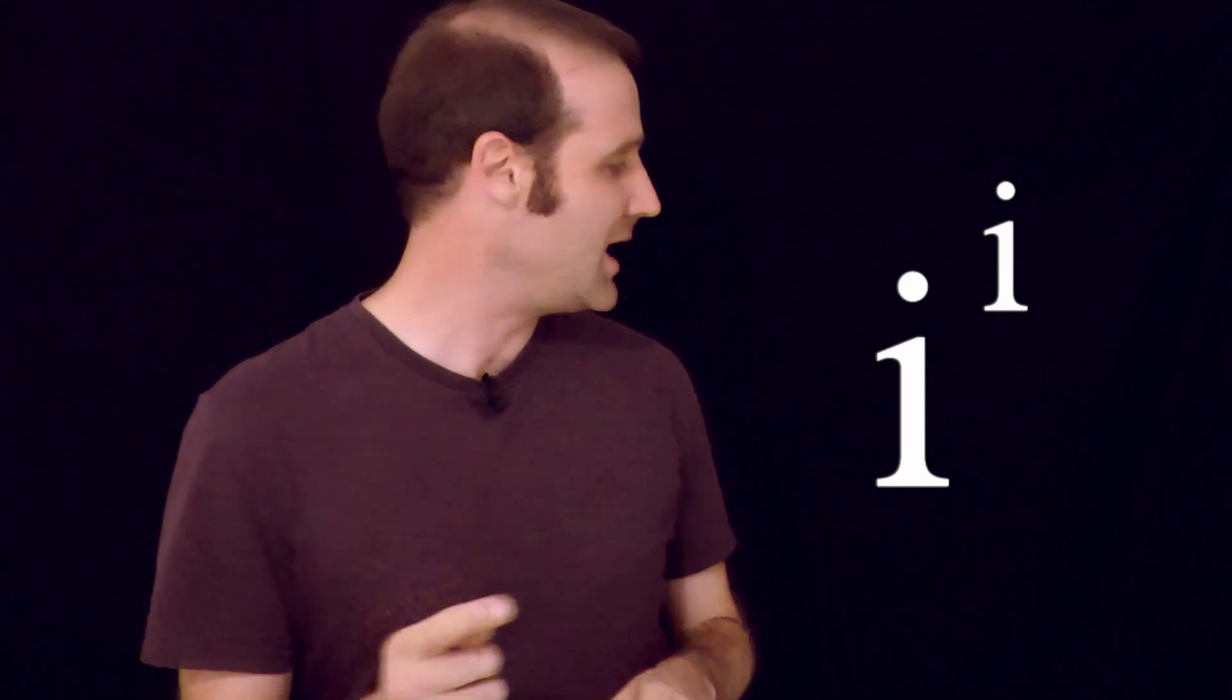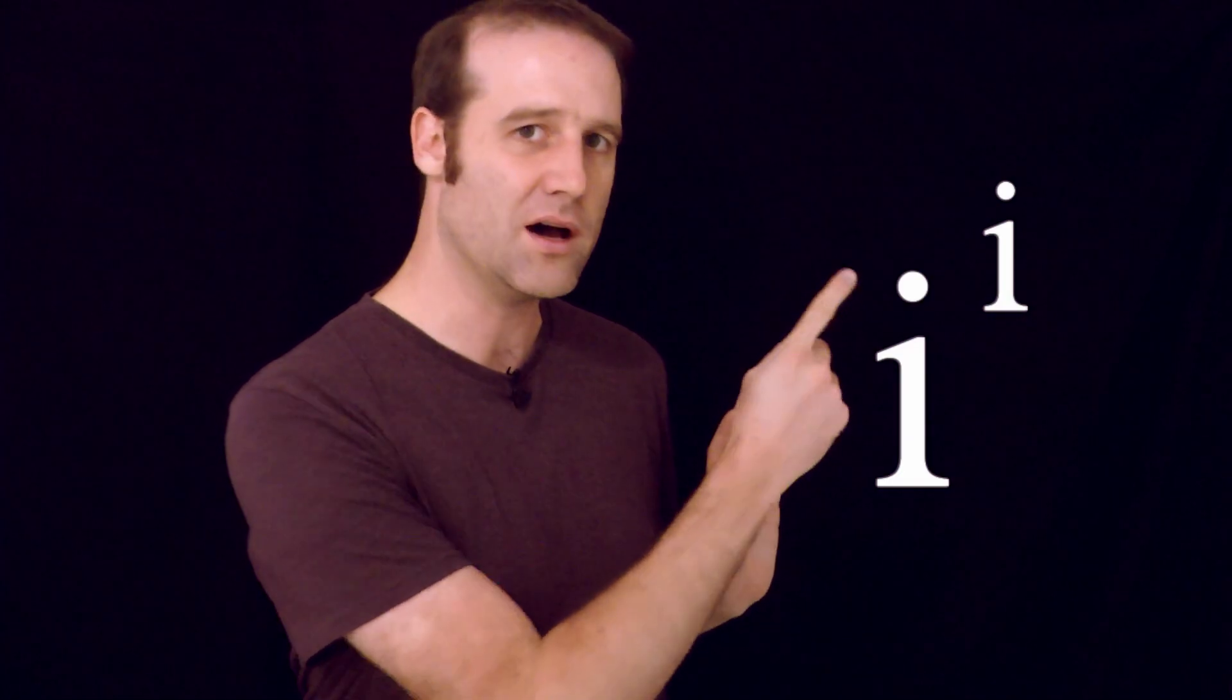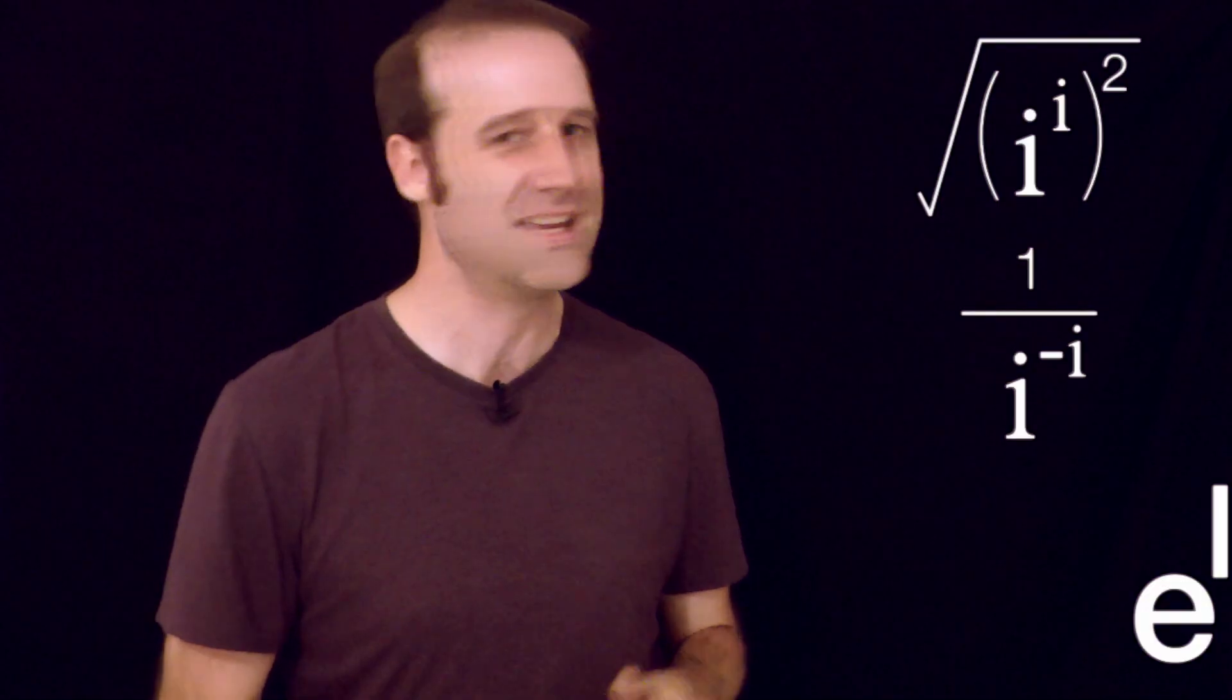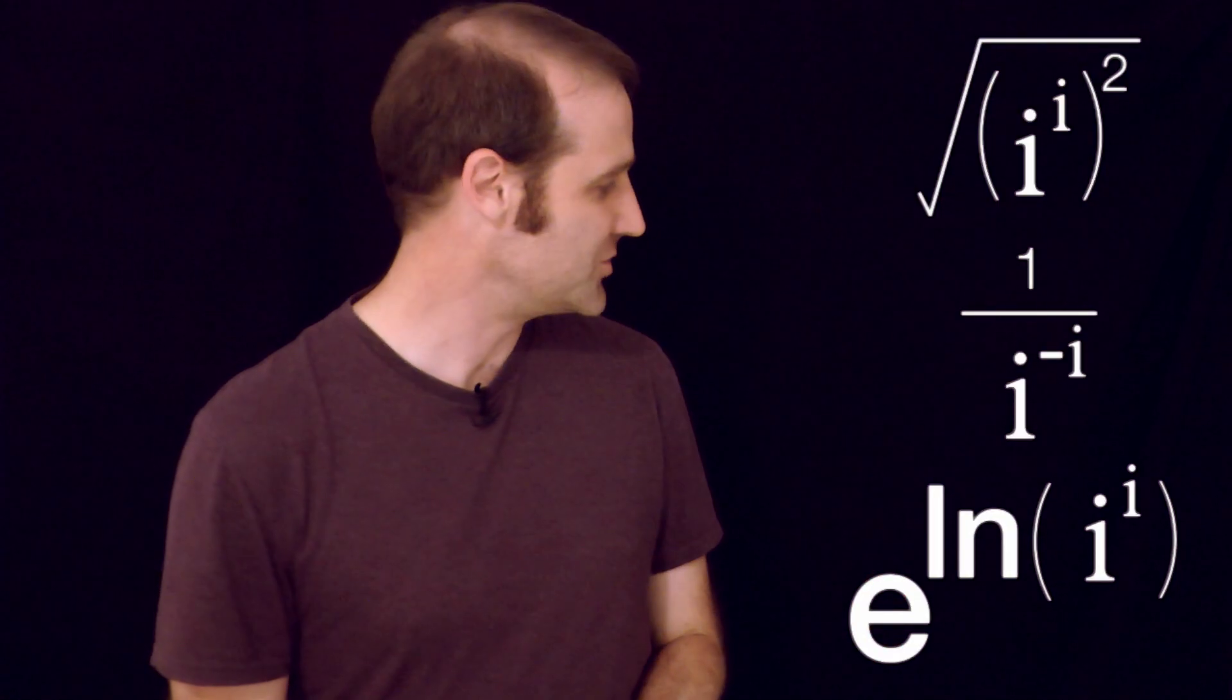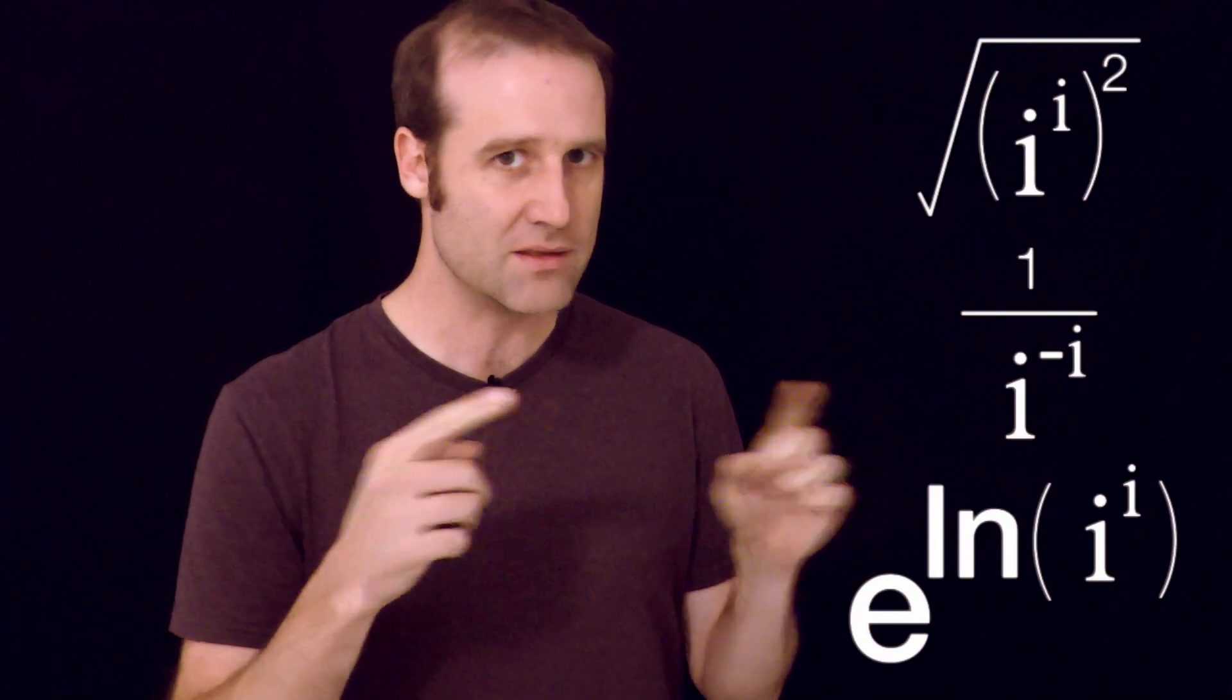So to work it out, our big issue here is prying apart the i in the base from the i in the power. I'm going to use a little trick to do that. I'm going to do a function on i to the i, and then I'm going to do the inverse of that. For example, I could square it and then take the square root, and we're back where we started. Or I could take the inverse of the inverse, or I could take e to the power of the natural log. And in theory, we'll still get the value of i to the i at the other end.